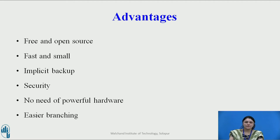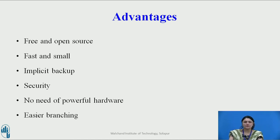Another advantage is security. Git uses a common cryptographic hash function called SHA-1 (Secure Hash Function 1) to name and identify objects in its database. Every file and commit is checksummed and retrieved by its checksum at the time of checkout, making it impossible to change a file, date, commit message, or other data in the Git database without Git knowing. Finally, easier branching — in centralized VCS, creating a new branch copies all the code, which is time consuming and inefficient. Deletion and merging of branches is also complicated. With Git, branching is very simple — it takes only a few seconds to create, delete, and merge branches.